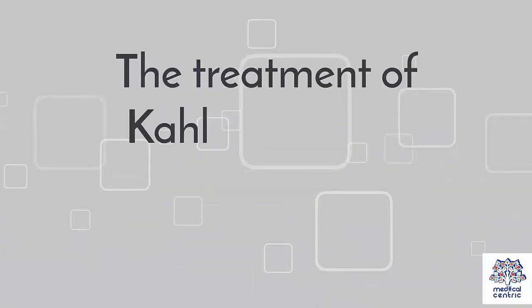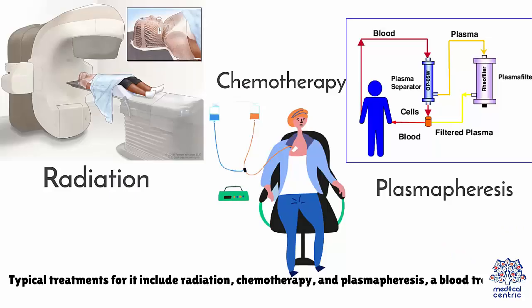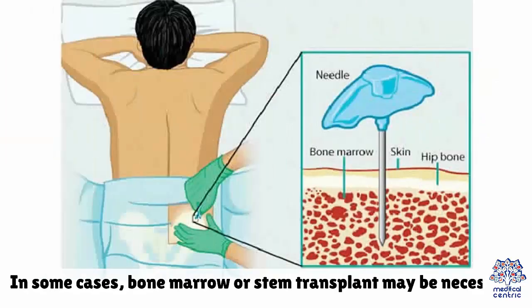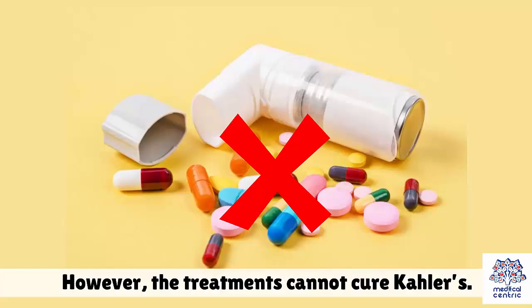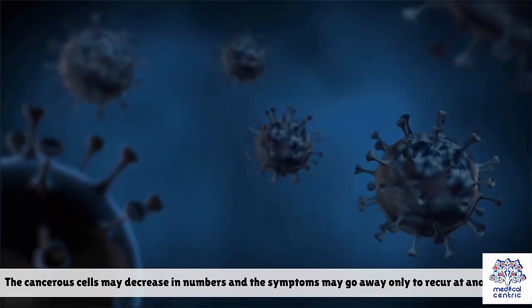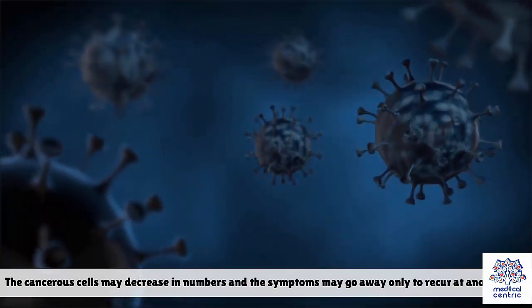Treatment: The treatment of Kahler's disease depends on the stage of cancer. Typical treatments include radiation, chemotherapy, and plasmapheresis, a blood treatment. In some cases, bone marrow or stem transplant may be necessary. However, the treatments cannot cure Kahler's. The cancerous cells may decrease in numbers and the symptoms may go away, only to recur at another time.